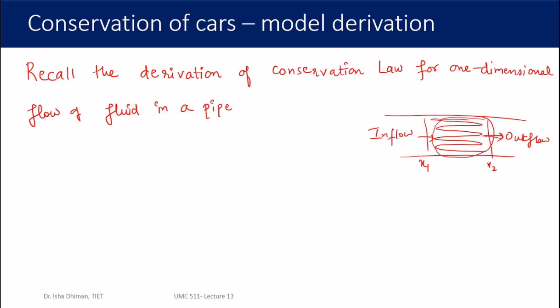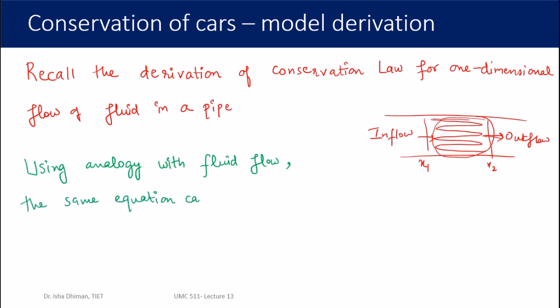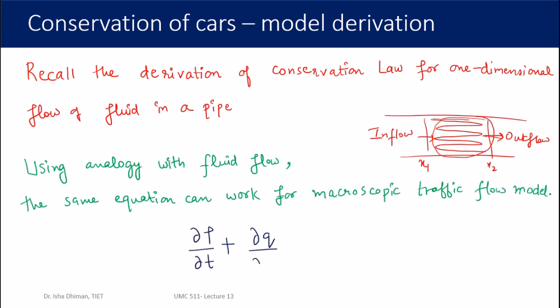The macroscopic traffic flow theory assumes that the flow of vehicles is just like a fluid. If you observe cars moving on a road from the top of a cliff or hill, it may appear to you that a fluid is flowing. Because of that analogy between fluid flow and traffic flow, the same equation can work here for the macroscopic traffic flow model.